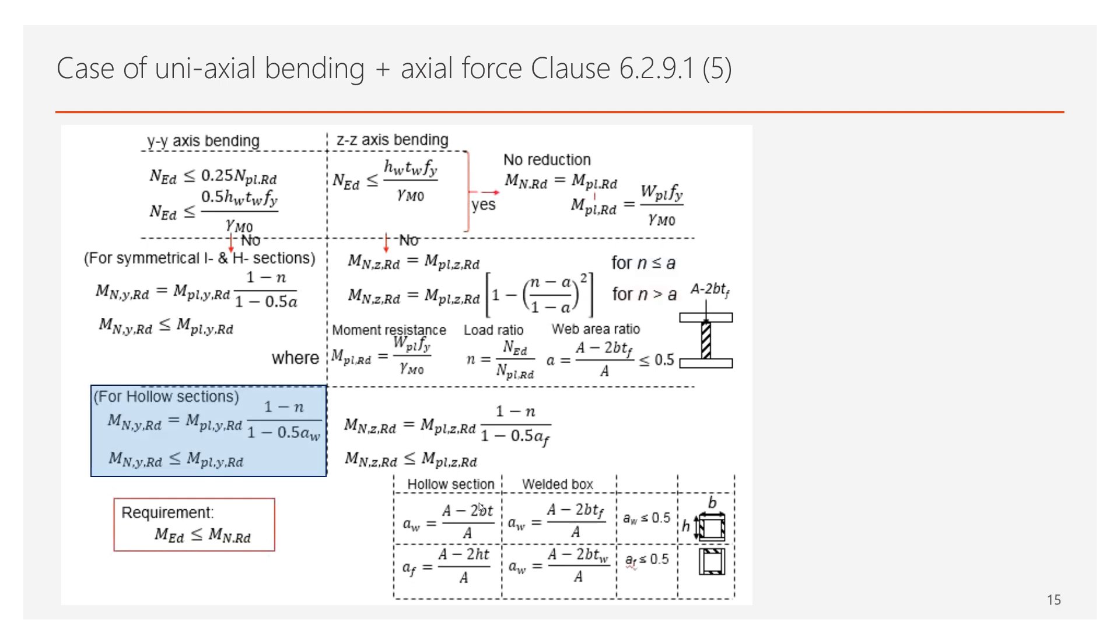To acquire the bending moment resistance of the member, you can multiply the actual moment capacity with the reduction factor computed as a function of n and a. It must be noted that for the zz axis bending, when n is less than a, there will be no reductions in the terms of the moment resistance. However, when n is more than a, a reduction is applied.